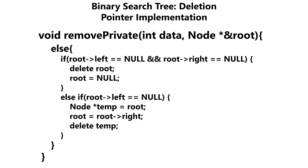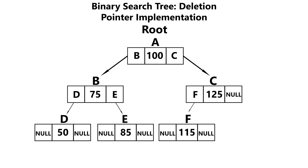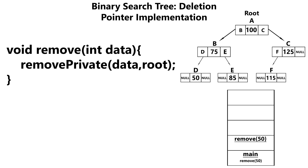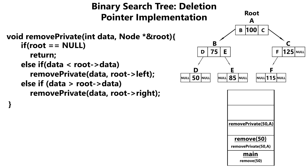Let's go over an example. Say we're given a tree and we want to delete 50, which is a leaf node. From our main function, we invoke our remove method and push it on top of the stack. Our remove method then invokes our remove private method, passing in 50 as well as the pointer to our root node — that gets added on top of the stack. Within remove private, we check if the root is null — it's not. We check if the data is less than the data at the current root — it is, so we go left by making a recursive call, passing in the data and the left child. That gets pushed on top of the stack.